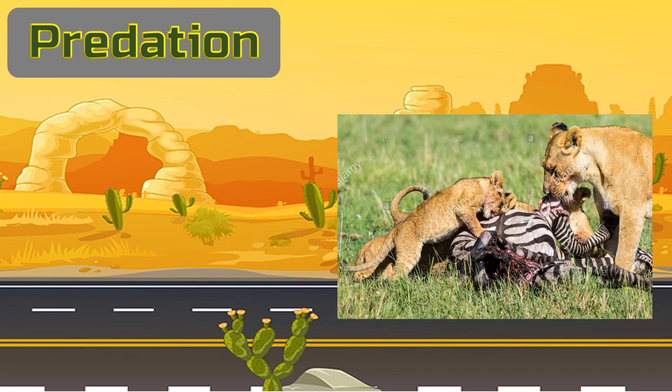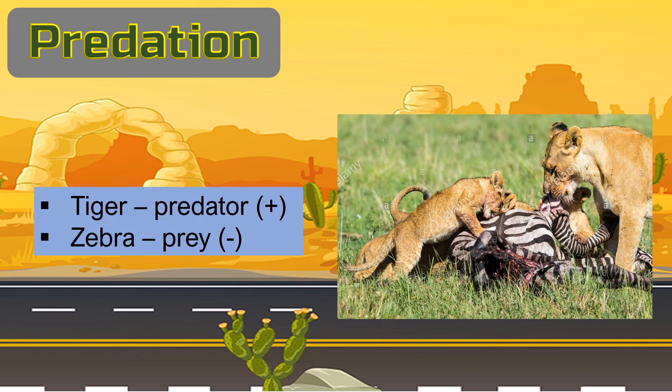Can you identify who is the predator and the prey just by looking at the picture? Very good! The tiger is the predator while the zebra is the prey.